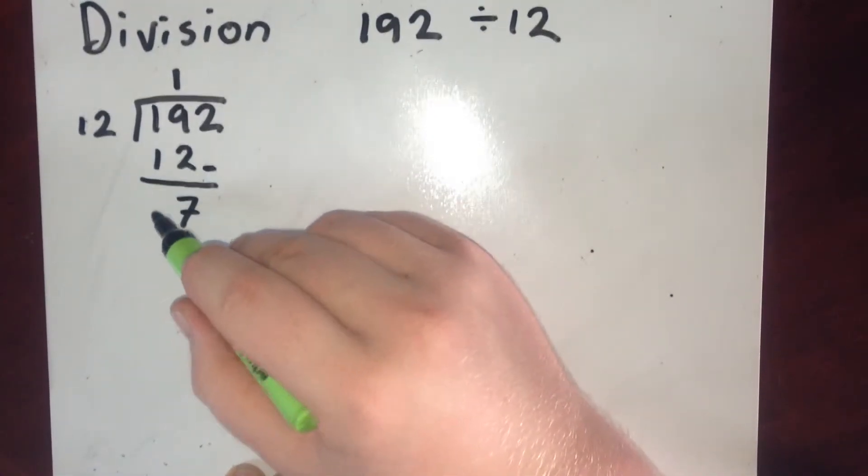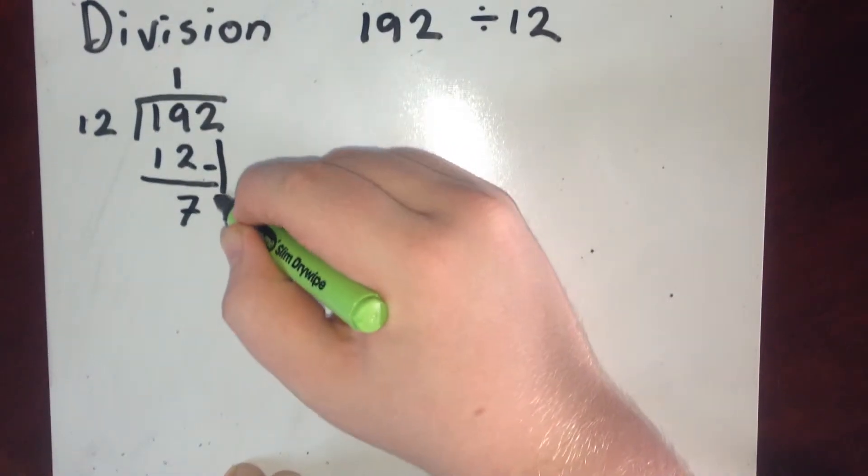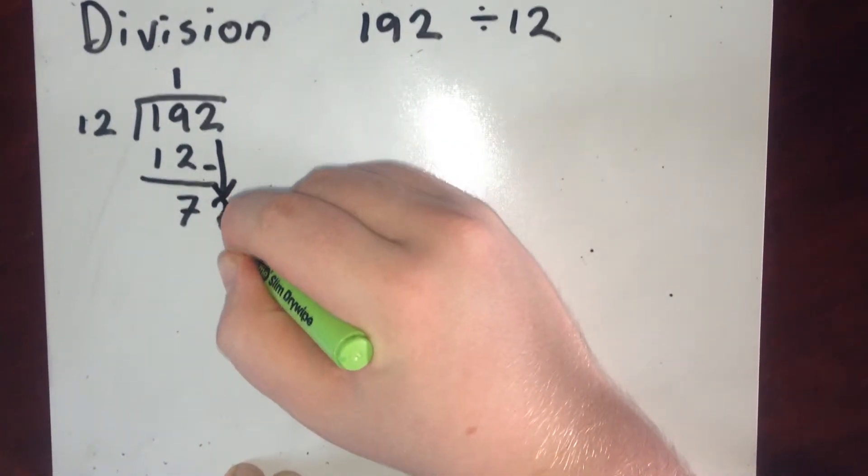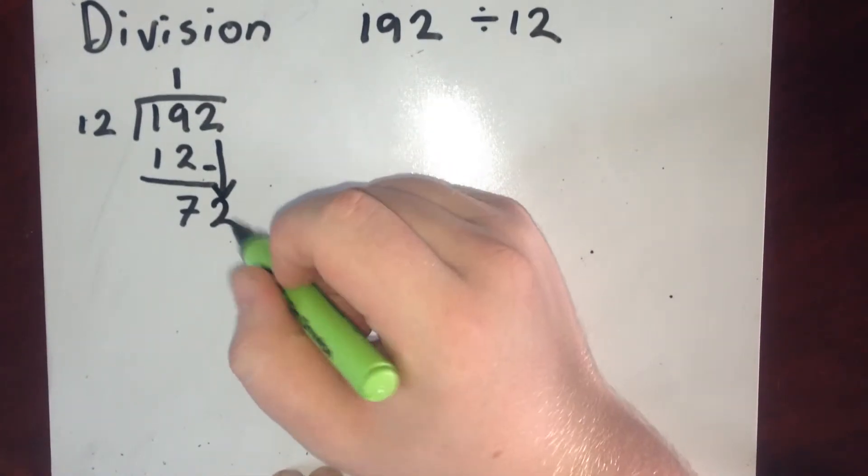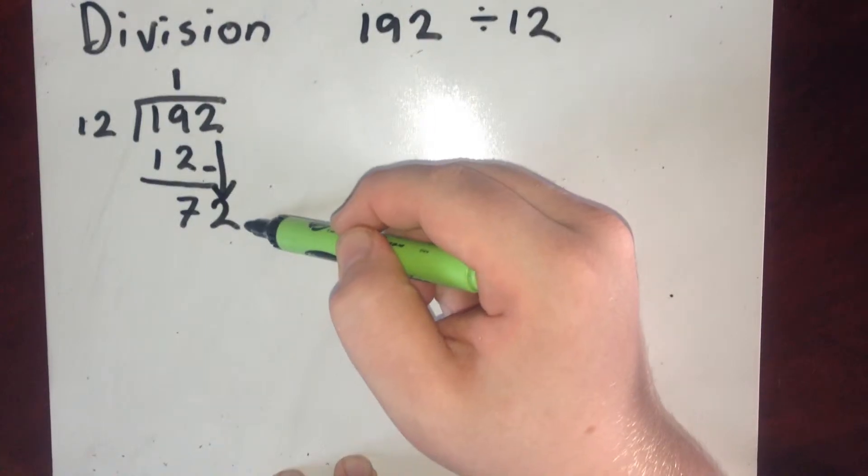There's nothing there. I then bring this 2 down. So that's 72. And then I start again. So I'll say how many 12s are in 72.